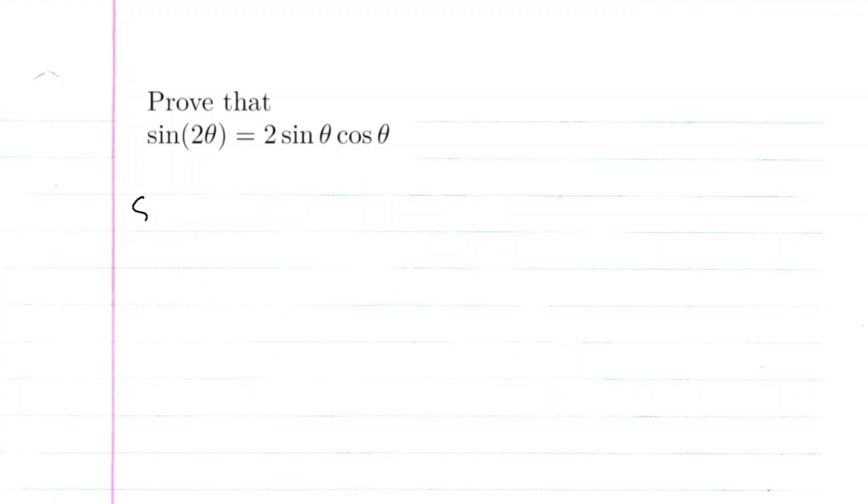Recall that sine of alpha plus beta equals sine alpha cosine beta plus sine beta cosine alpha. We're going to use this to prove our double angle formula. Let's start our proof.